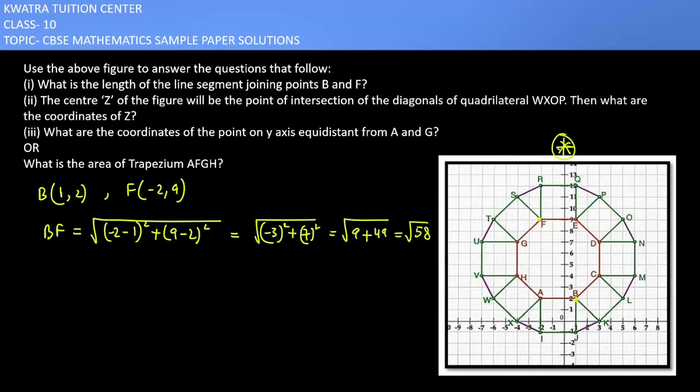So √58 is our answer for the first part. For the second part: the center Z of the figure will be the point of intersection of the diagonals WX and OP. What are the coordinates of Z?